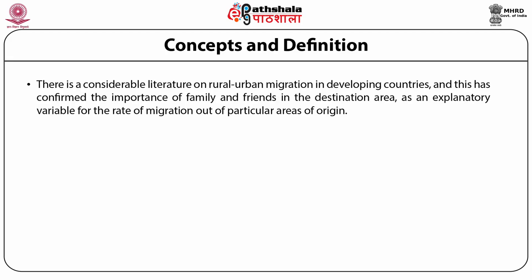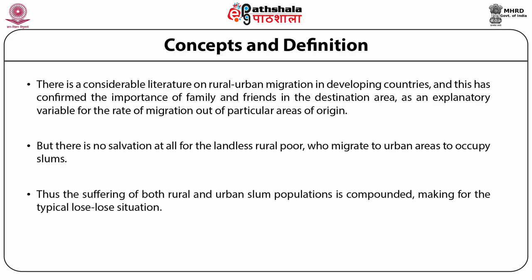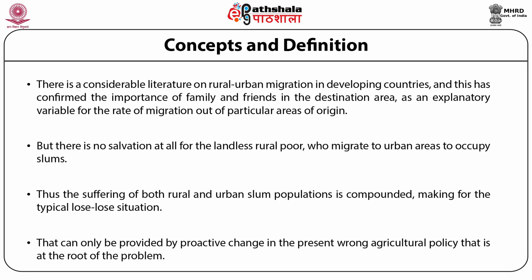Money through government aid cannot solve the problem of small farm availability, and there is no salvation for the landless rural poor who migrate to urban areas. Seasonal migration changes to permanent migration; it is estimated that metros are swelling with a daily influx of people, flowing into large and small cities and towns. Thus, the suffering of both rural and urban slum populations is compounded. What these migrants want is a fighting chance to live in dignity. That can only be provided by proactive change in the present agricultural policy that is at the root of the problem.